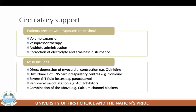Many medicines and toxins produce hypotension through various mechanisms. Blood pressure depression may occur due to direct depression of myocardial contraction — for example, quinidine — or by disturbance of central cardiorespiratory centers, as with quinidine, severe GI losses as with paracetamol, or peripheral vasodilation as with ACE inhibitors, calcium channel blockers, or theophylline.